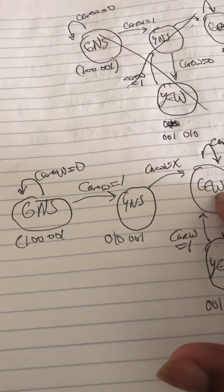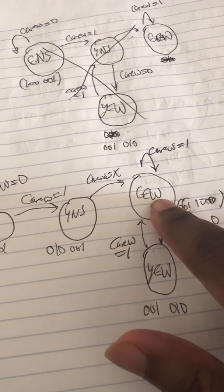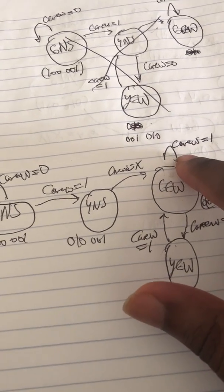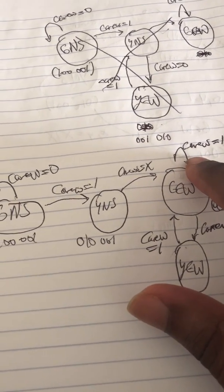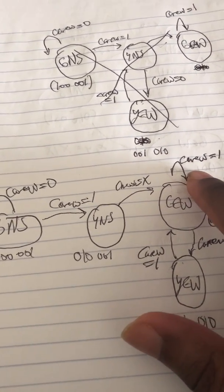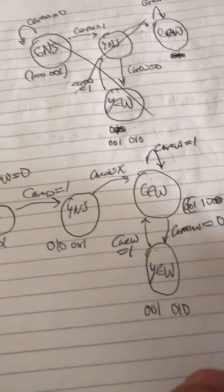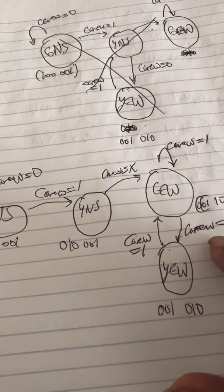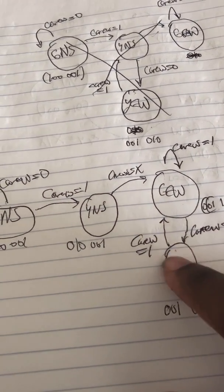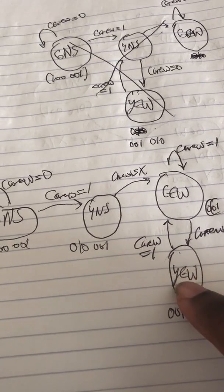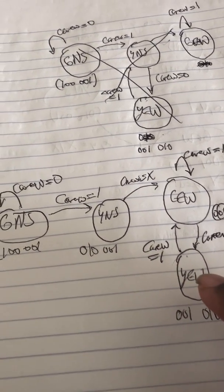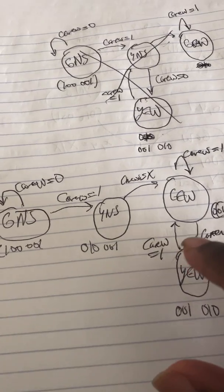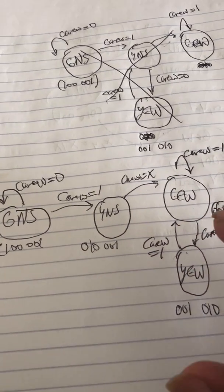From yellow north-south, it doesn't care about the input and transitions to the green east-west state. In the green east-west state, it stays if the car east-west signal is one, and transitions to yellow east-west if car east-west is zero.